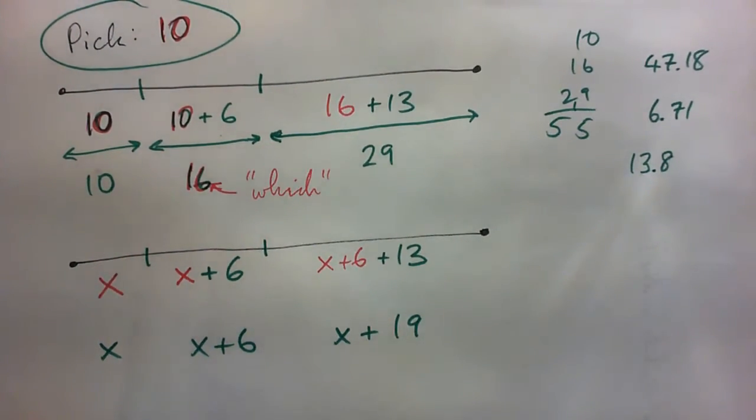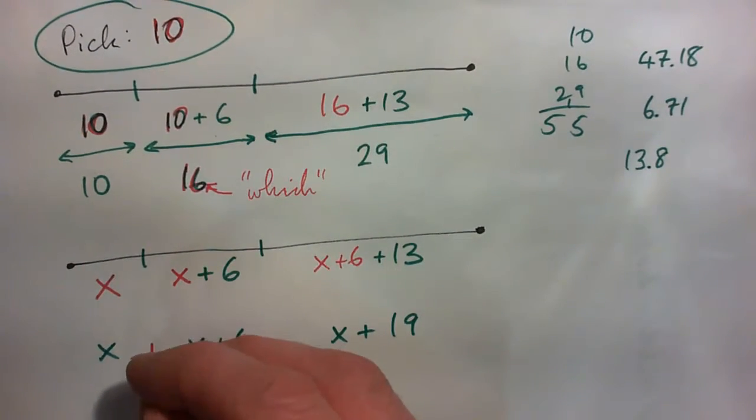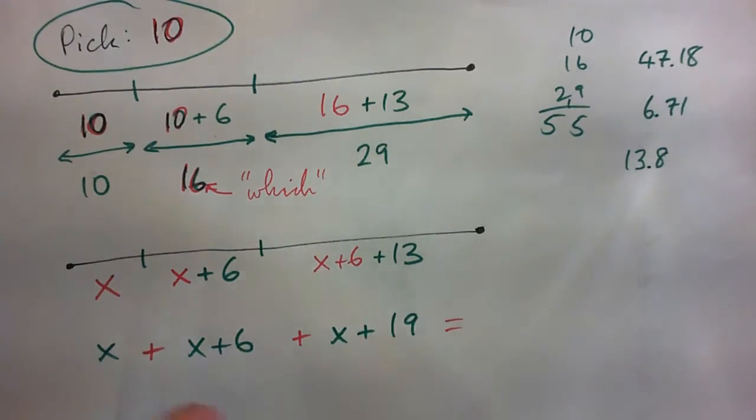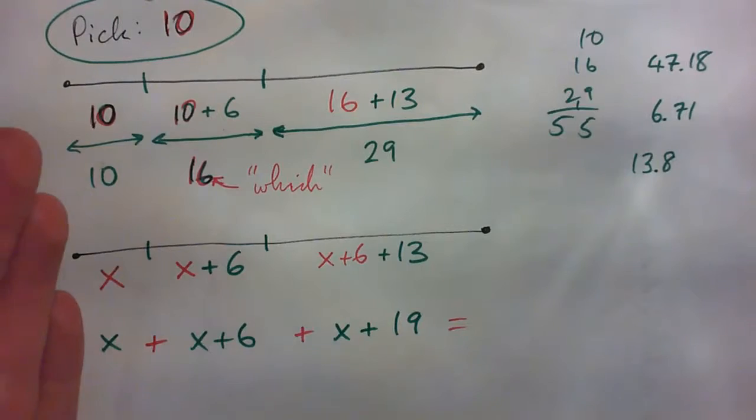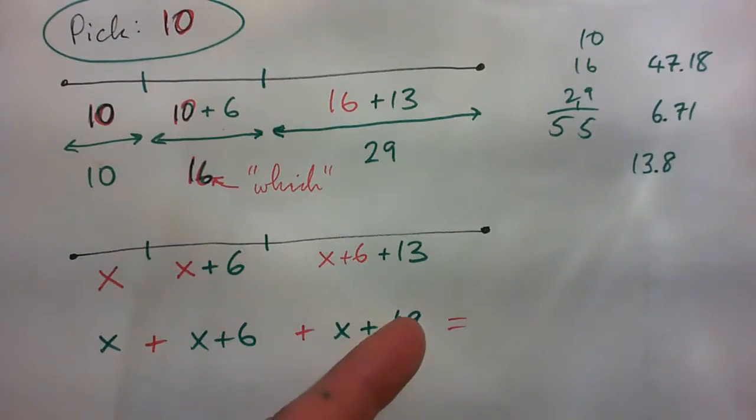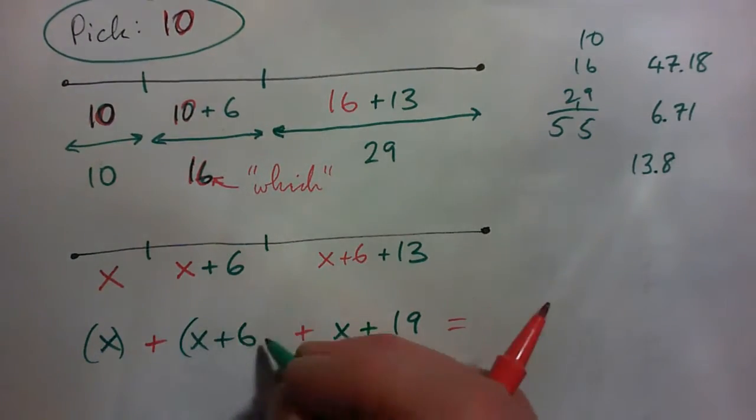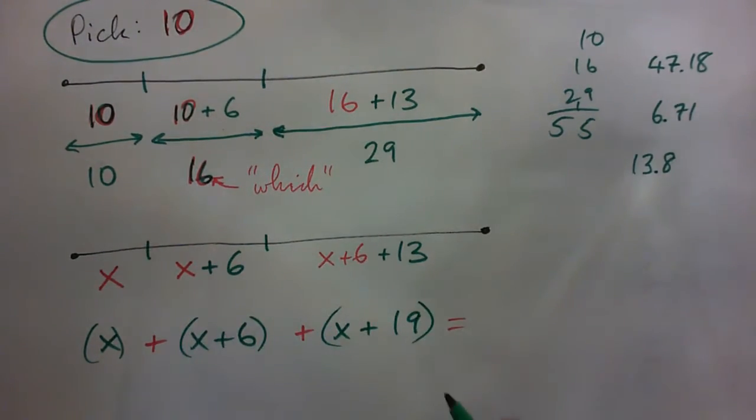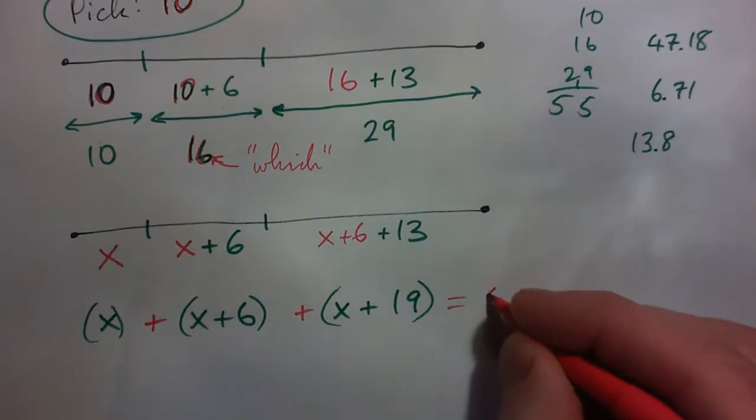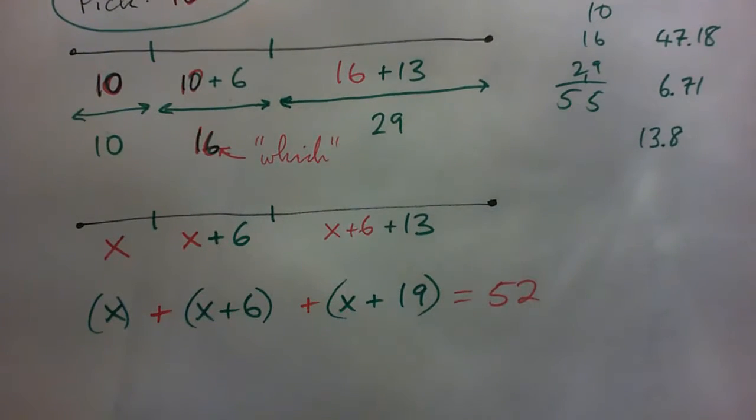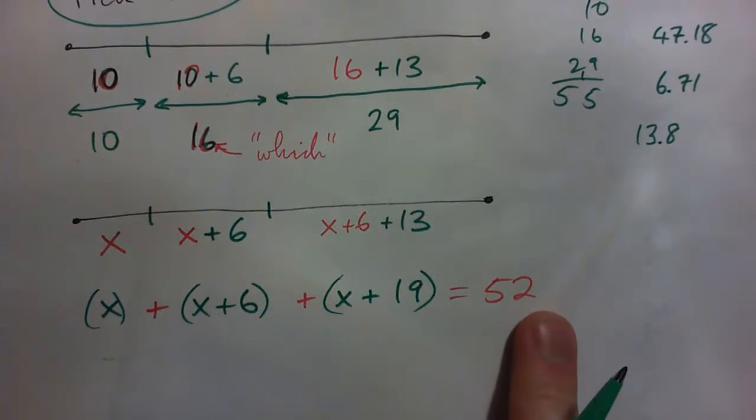And it says it's a 52 meter long rope, which if you add all of each length together, what are we going to get? Add each length together: X, X plus 6, and X plus 19. Add each length together and you get what? And you can put parentheses around them if you want, just to show that they're their own separate length. It all adds up to 52. Now press pause and solve for X and see what you get.